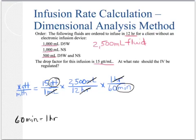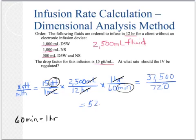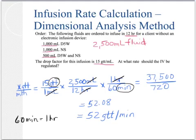Performing the calculations: 15 × 2,500 = 37,500, divided by 12 × 60 = 720. Doing the division, we are left with 52.08. Because we cannot calibrate in less than full drops, we apply our rounding rules. Since 0 is in the tenths position and it is less than 5, we keep 52 drops per minute as our answer — exactly what we got in our previous examples.